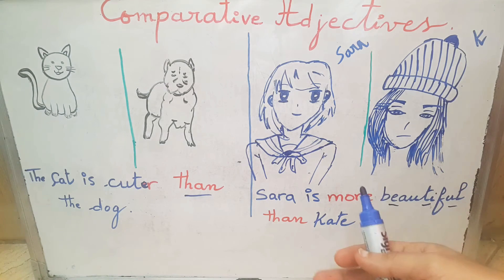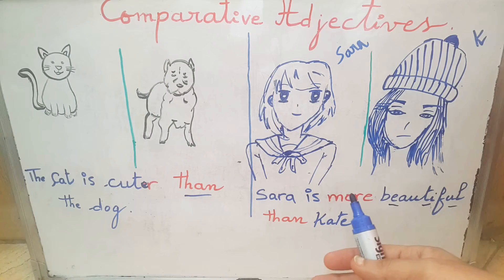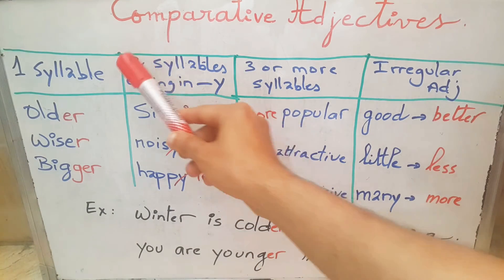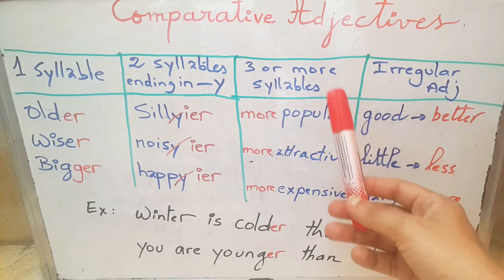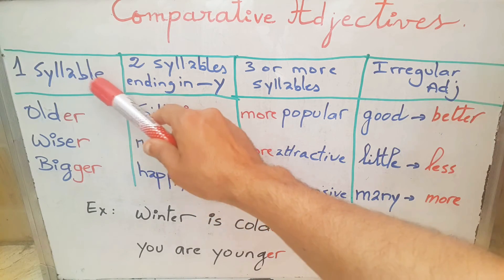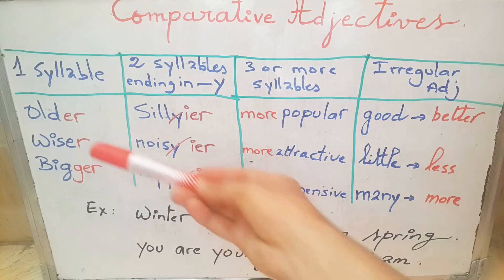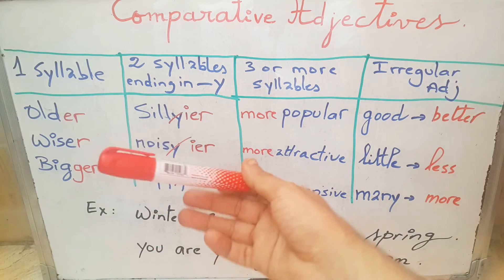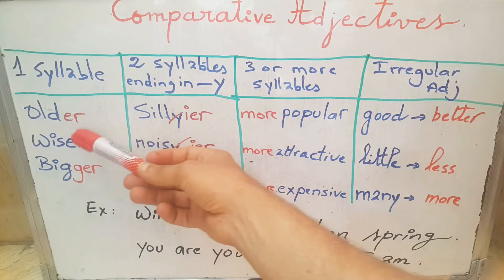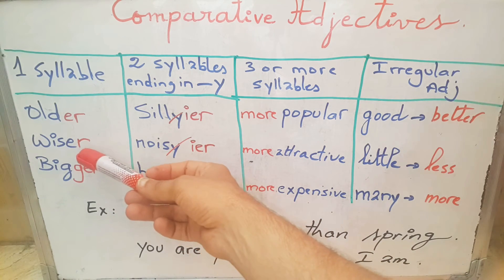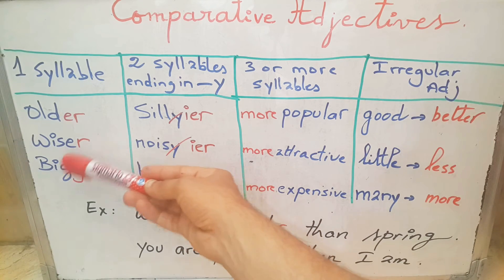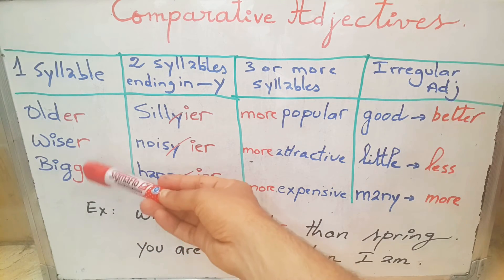I will go into more details in the second part. So here we have four categories of comparative adjectives. The first one is one-syllable adjectives. For example, old — to form the comparative we add ER: older. Wise, we just add ER: wiser. Like my first example, cute. Big becomes bigger.